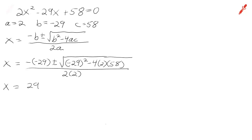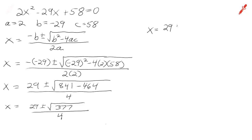So we're going to have positive 29 plus or minus the square root of negative 29 squared, which is 841. And we're going to subtract 4 times 2 times 58, which is 464, all over 4. Now we'll have 29 plus or minus the square root of 377 over 4. And 377 is not a perfect square, so we're going to have to get a decimal approximation.